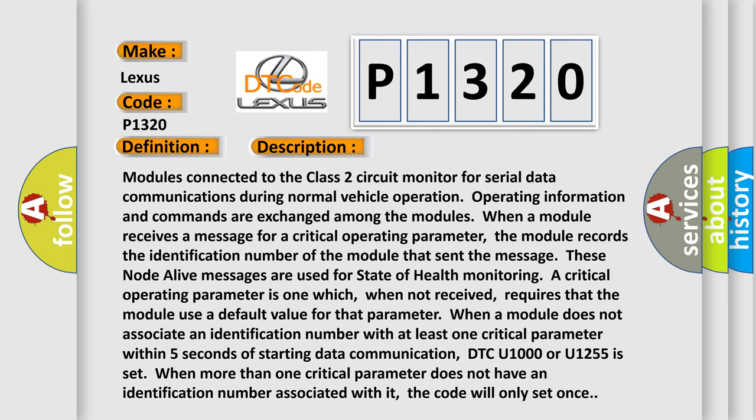When more than one critical parameter does not have an identification number associated with it, the code will only set once.